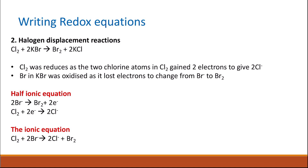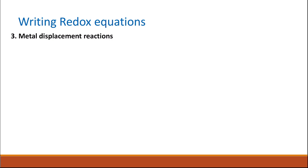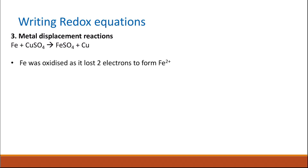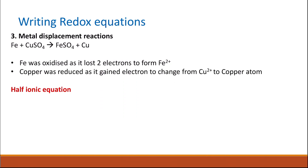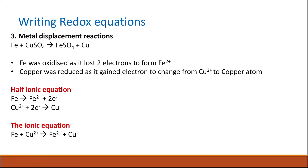The ionic equation is: Cl₂ + 2Br⁻ → 2Cl⁻ + Br₂. Potassium is the spectator ion and is not included. A third example is metal displacement. More reactive metals displace less reactive metals from their salts. Iron is more reactive than copper, so iron reacts with copper sulfate to give iron sulfate and copper metal. Iron is oxidized (loses electrons to form Fe²⁺) and copper is reduced (gains electrons). Sulfate is the spectator ion.